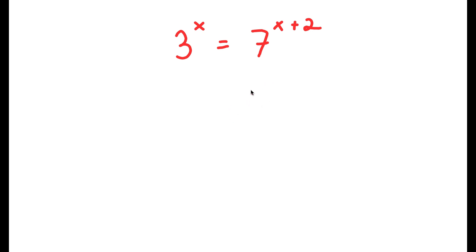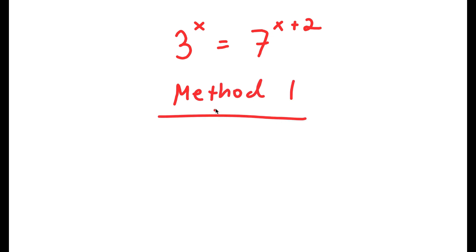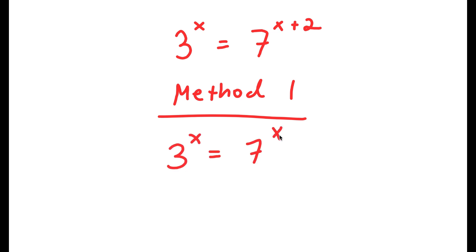So in this problem, I have 3 to the power of x is equal to 7 to the power of x plus 2. I have two methods of solving this equation. So for method 1, I have 3 to the power of x is equal to 7 to the power of x plus 2.